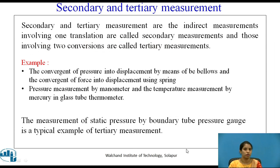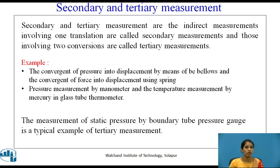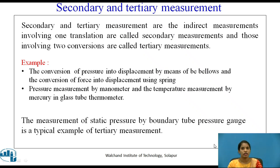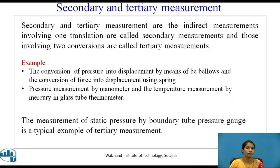Secondary and tertiary measurements are indirect measurements. Those involving one translation are called secondary, and those involving two conversions or two translations are called tertiary measurement. Examples include conversion of pressure into displacement by means of bellows, conversion of force into displacement using a spring, pressure measurement by manometer, and temperature measurement by mercury-in-glass thermometer. The measurement of static pressure by Bourdon tube pressure gauge is a typical example of tertiary measurement.